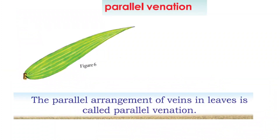The next one is parallel venation. In this type of venation there is no crossing over — the two veins are not connected to each other. One vein is parallel to another. The parallel arrangement of veins in leaves is called parallel venation.